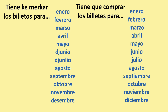These are the months of the year starting with January and ending in December. In Ladino: 'tienen que mercar los billetos para enero, febrero, marzo, abril, mayo, junio, julio, agosto, septembre, octobre, novembre, december.' She or he needs to buy the tickets for January through December. In Spanish: 'tiene que comprar los billetes para enero, febrero, marzo, abril, mayo, junio, julio, agosto, septiembre, octubre, noviembre, diciembre.'